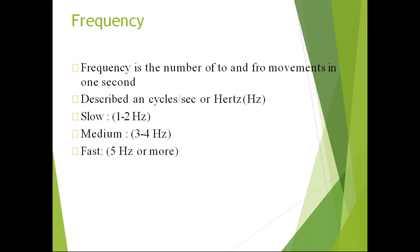Frequency means the number of to-and-fro movements a patient will have in nystagmus in one second. It is described as cycles per second or hertz. Slow frequency is 1 to 2 cycles per second, medium is 3 to 4, and fast is more than or equal to 5.